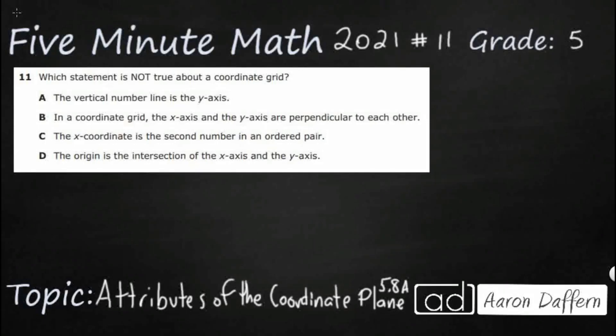Hello and welcome to 5-Minute Math. Today we are looking at the 5th grade concept of attributes of the coordinate plane. This is standard 5.8a in the great state of Texas and we are using item number 11 off the 2021 released STAR test.